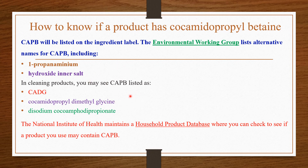Many CAPB-containing products are already available and we are often unaware of them because the common names are not widely known. We don't realize how many alternative names surfactants have, and how directly or indirectly we are using surfactants all the time. The National Institute of Health maintains a household product database where you can check whether a product you use contains CAPB.